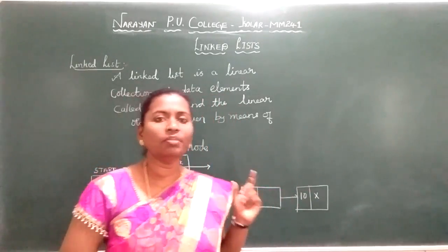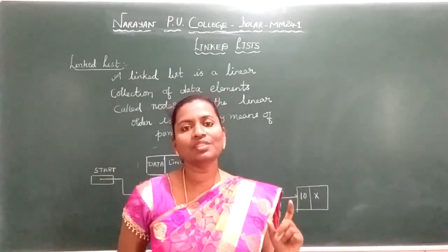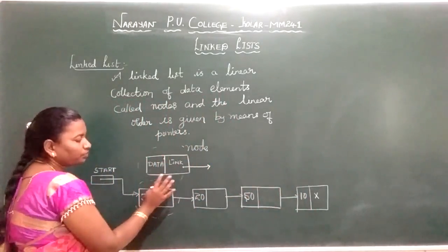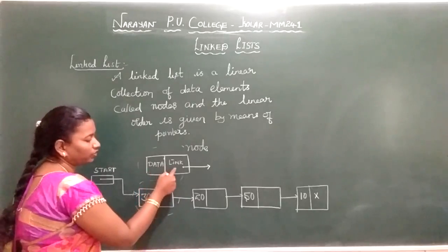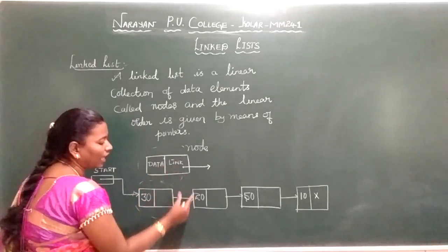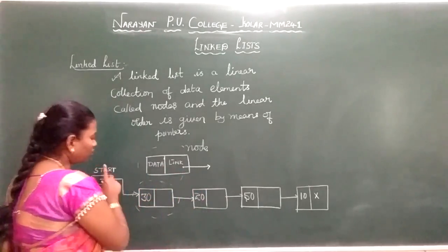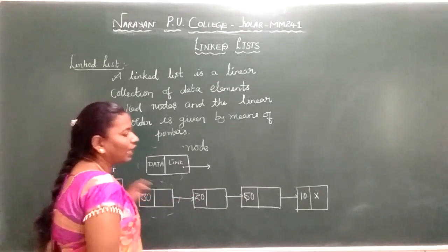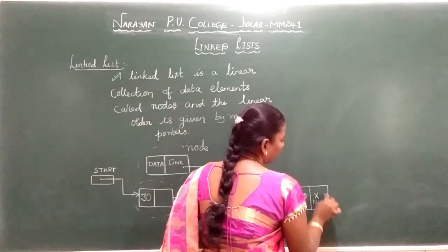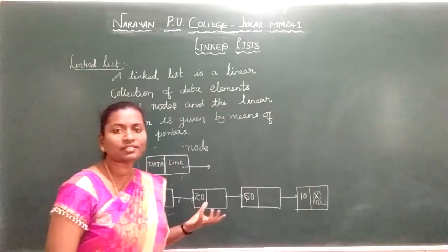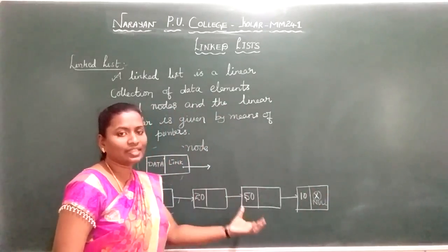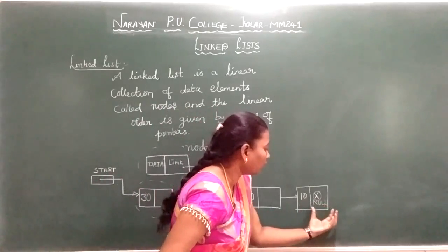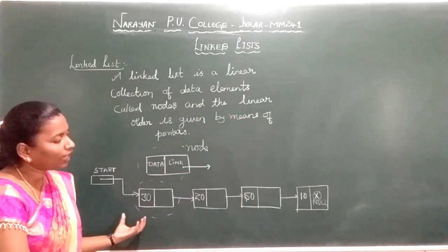A node contains two fields: one is the data field and the next is the link field. The data field stores the information; the link field holds the address of the next node — a pointer which points to the next node. We call the first node the head or start node. The link field of the last node will always be null, indicating we have reached the end of the list. While traversing, when the address field is null, we know to end the linked list.